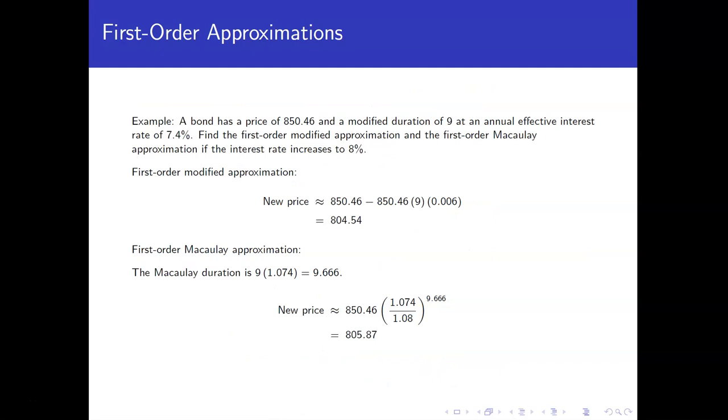So let's do an example. Let's say we have a bond. It has a price of $850.46 and a modified duration of nine when we use an annual effective interest rate of 7.4%. Let's use both of our approximation methods that we just developed to figure out what happens to the new price if the interest rate changes from 7.4% up to 8%.